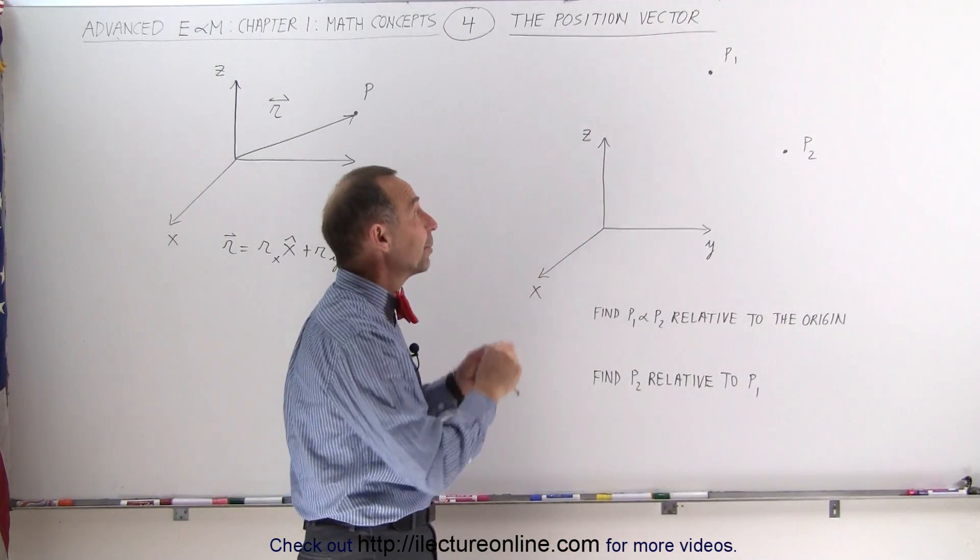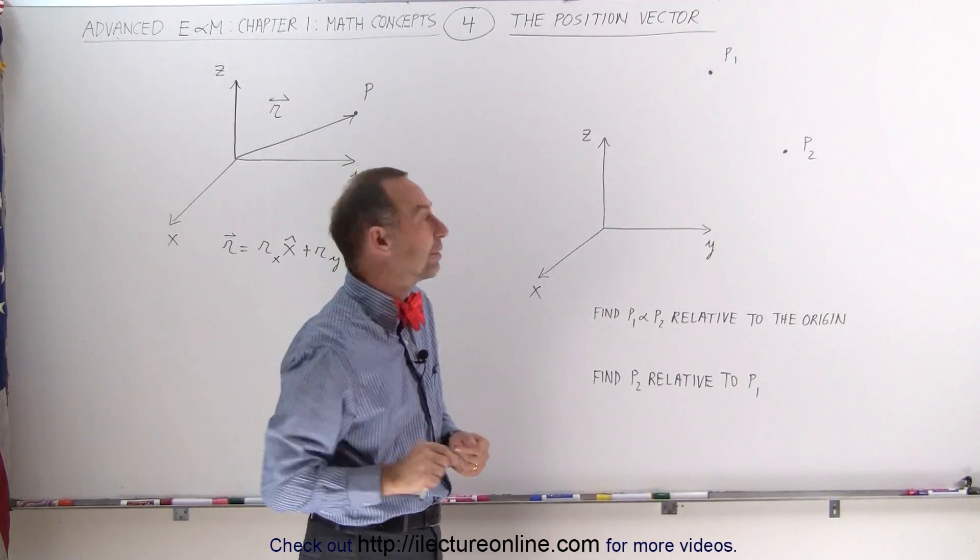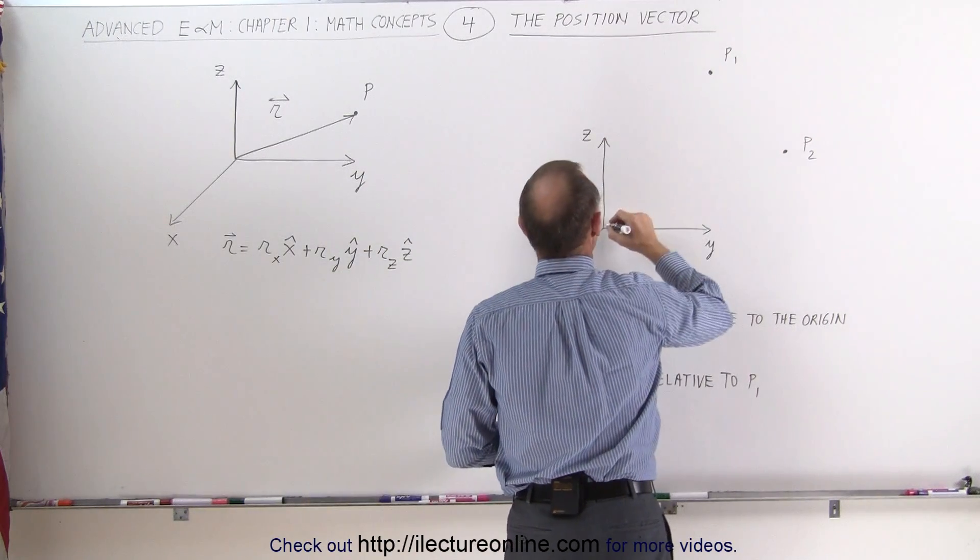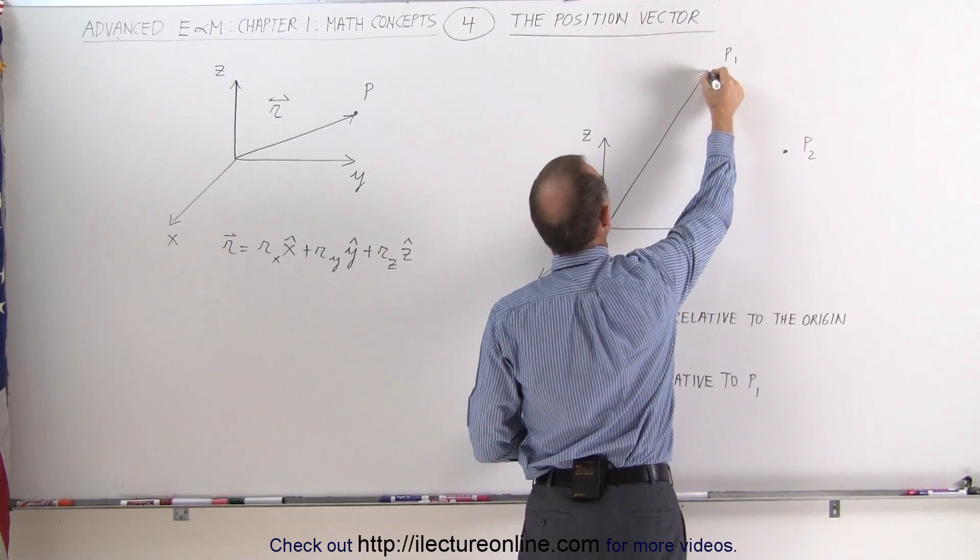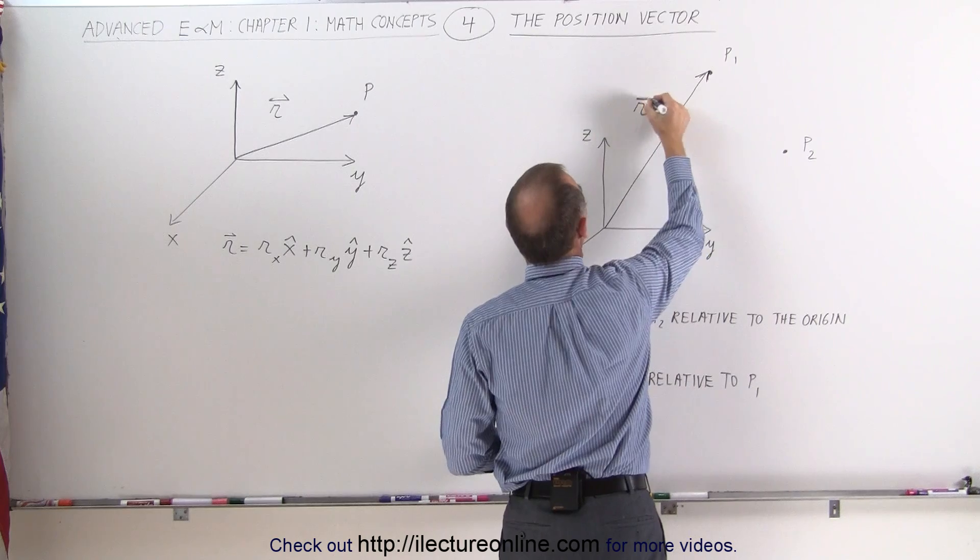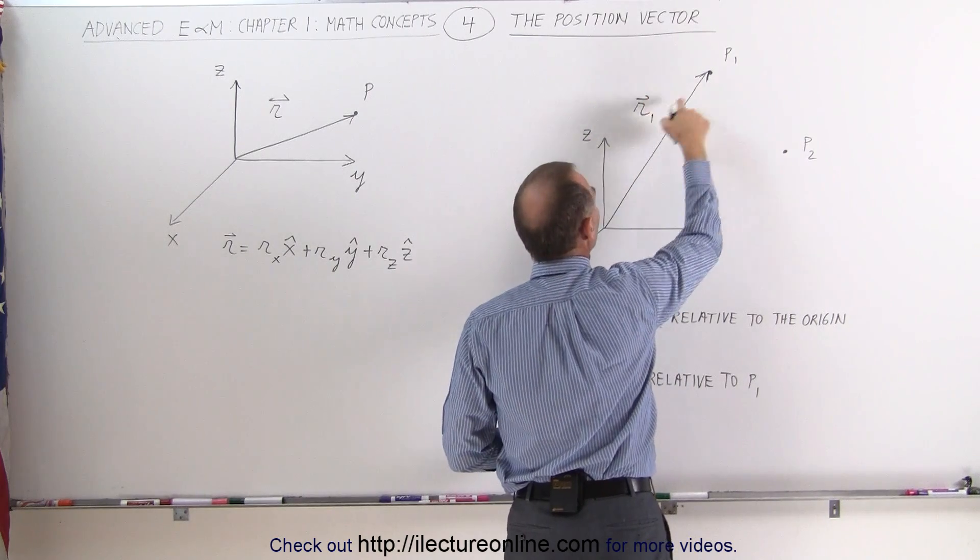Well, the first thing we want to do is find the position vectors of both points relative to the origin. So the first position vector from the origin to p1 would be this vector right here. And so let's call this vector r subscript 1, that's the position vector to point 1.